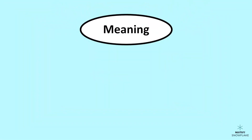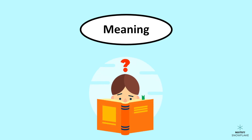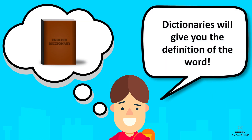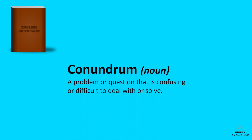Now let's talk about finding the precise meaning of a word. When you come across a word you don't know, the first thing you can do is look it up in a dictionary. Dictionaries will give you the definition of the word, which is basically what it means. For example, if you look up the word conundrum in a dictionary, you'll find that a conundrum is a difficult problem or question.